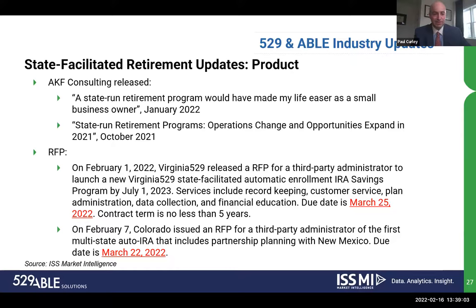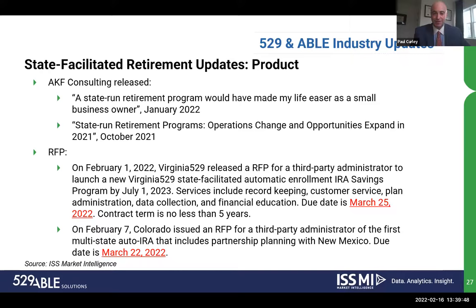Two updates on RFPs: Virginia 529 released an RFP for a third-party administrator to launch a new Virginia 529 state-facilitated automatic enrollment IRA program, with a due date of March 25th, 2022, and a contract term of no less than five years. On February 7th, Colorado issued an RFP for a third-party administrator — this will be the first multi-state auto-IRA program, issued in partnership with New Mexico, with a due date of March 22nd, 2022.